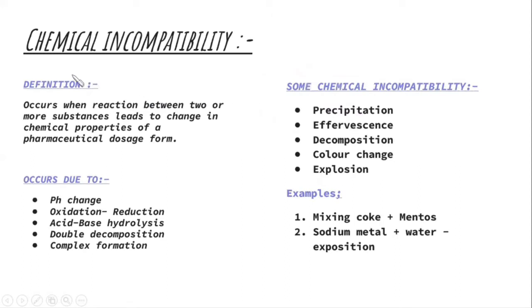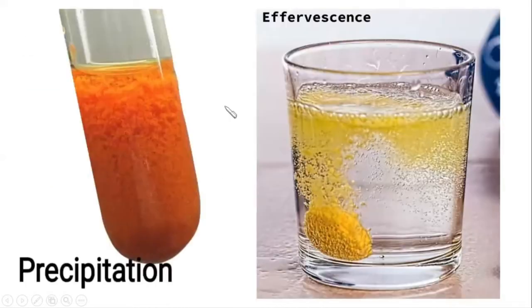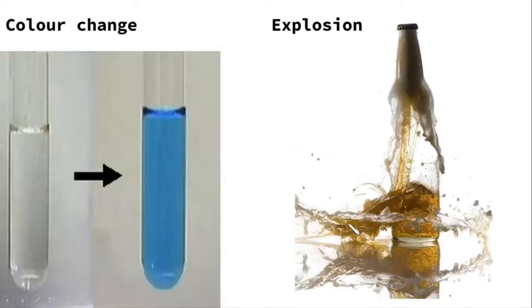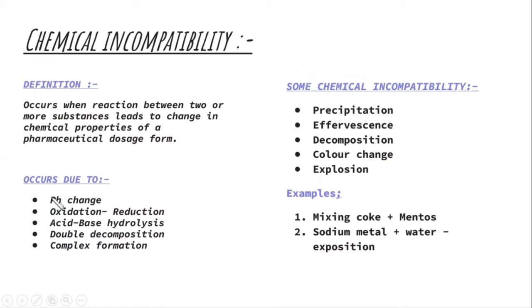What is chemical incompatibility? Chemical incompatibility occurs due to a reaction between two substances that leads to chemical changes such as precipitation, effervescence, color change, or explosion. This may occur due to pH change, oxidation, decomposition reaction, or complex formation.